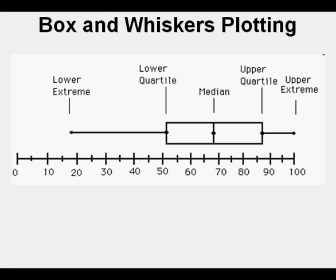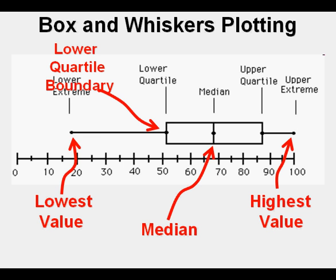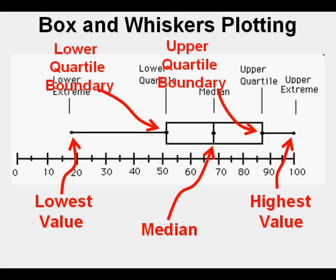In a box and whiskers plot the lowest value is the tip of the left whisker, and the highest value is the tip of the right whisker. The center of the box is the median, or middle value of the data set. The median of the lower half of the data is the lower edge of the box where the left whisker starts — this is the lower quartile boundary. The median of the upper half of the data is the upper edge of the box where the right whisker starts — this is the upper quartile boundary.